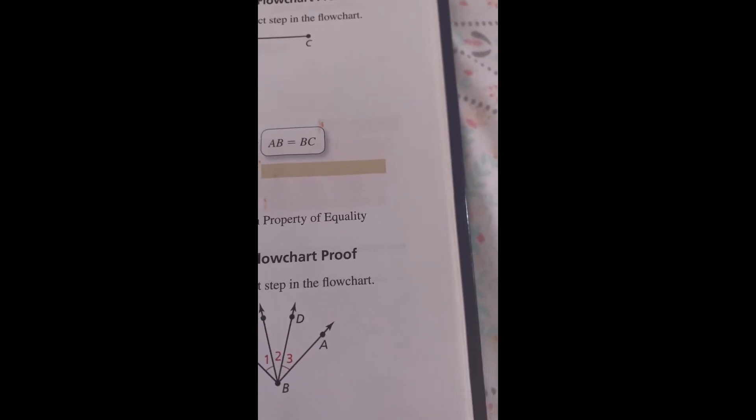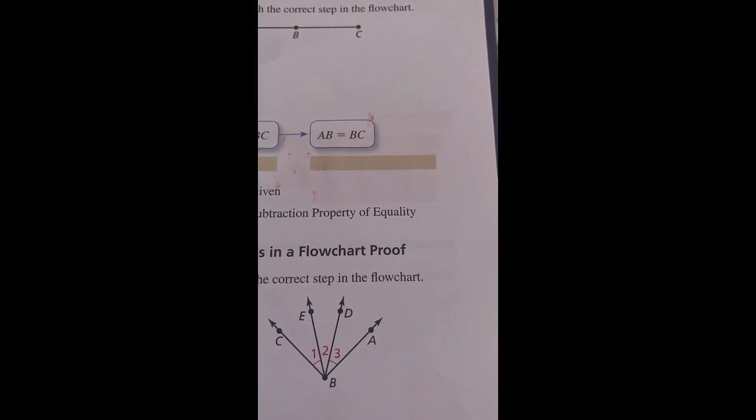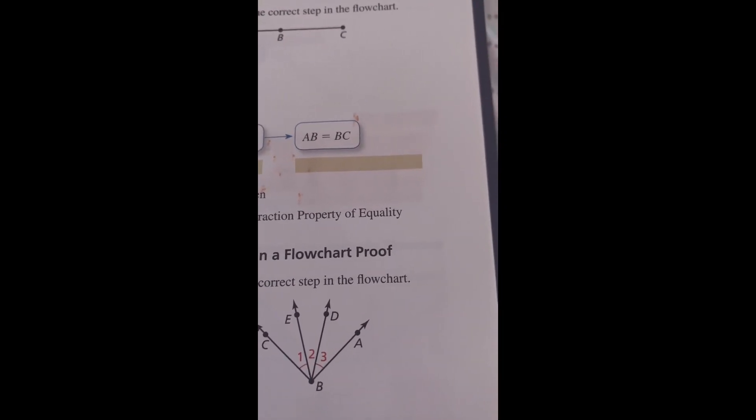2.6 Proving Geometric Relationships. Modeling with Mathematics: To be proficient in math, you need to map relationships using such tools as diagrams, two-way tables, graphs, flowcharts, and formulas.